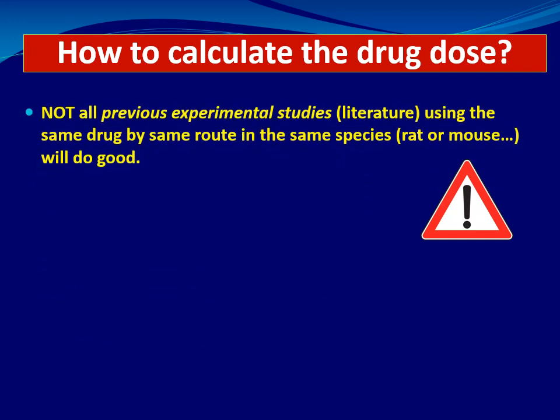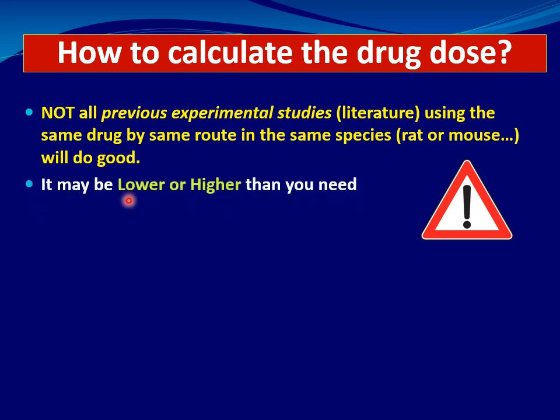So which is better? As agreed, I must calculate both, search for both, and check whether there is any rationale. If there is a difference between the two, it is best to test two doses, because not all previous experimental studies using the same dose, route, and species will give a good result. From practical experience, you may take a dose from the literature, apply it in your animals, and find it either kills them or has no effect at all — it may be lower or higher than what you need, or toxic or not effective.